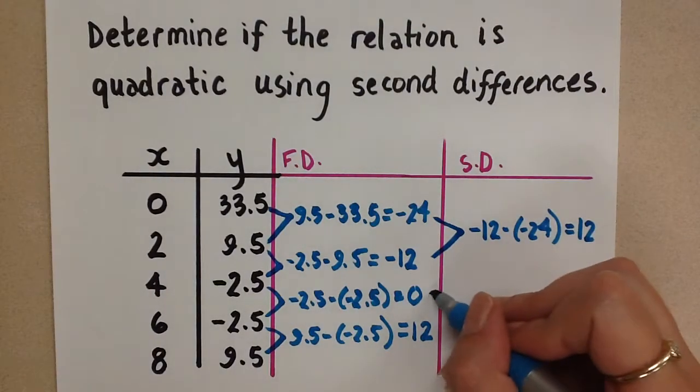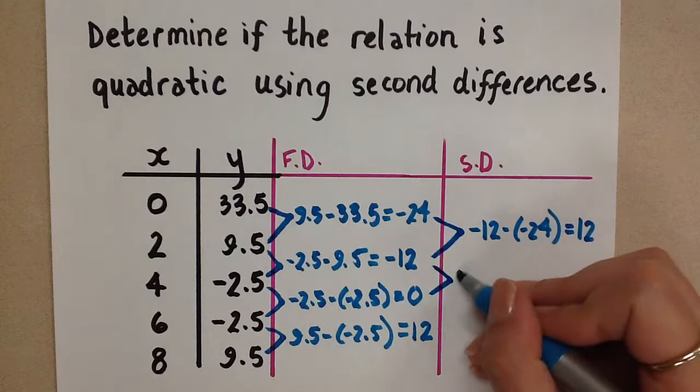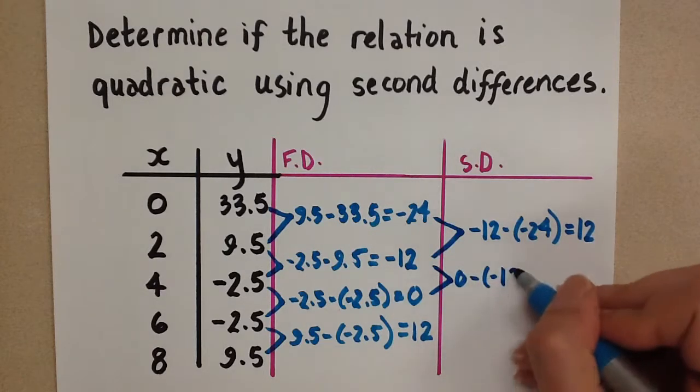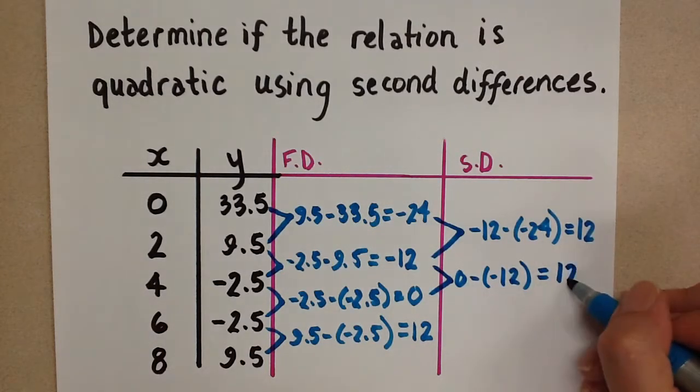Then we do it again. 0 minus negative 12. And when we subtract that, we're going to get positive 12.